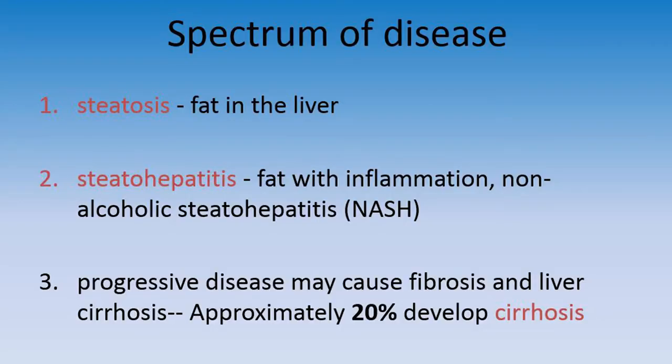To summarize: steatosis is fat in the liver — simple fatty liver disease. Steatohepatitis is fat with inflammation — non-alcoholic steatohepatitis. Progression of the disease may lead to fibrosis, liver cirrhosis, and finally cirrhosis in approximately 20% of cases.